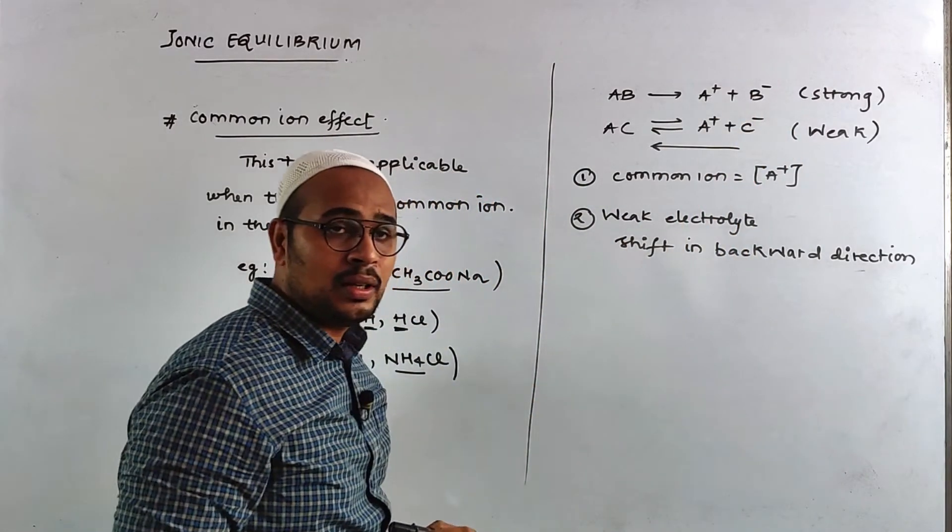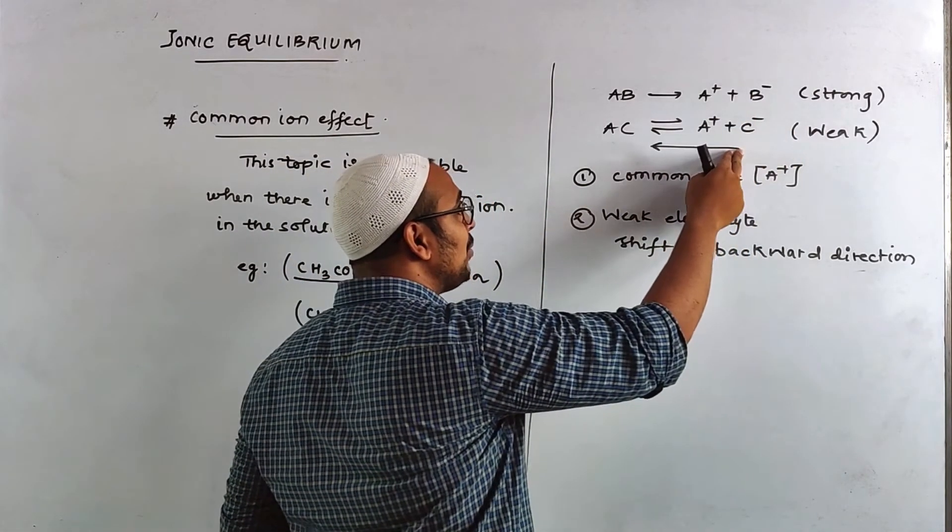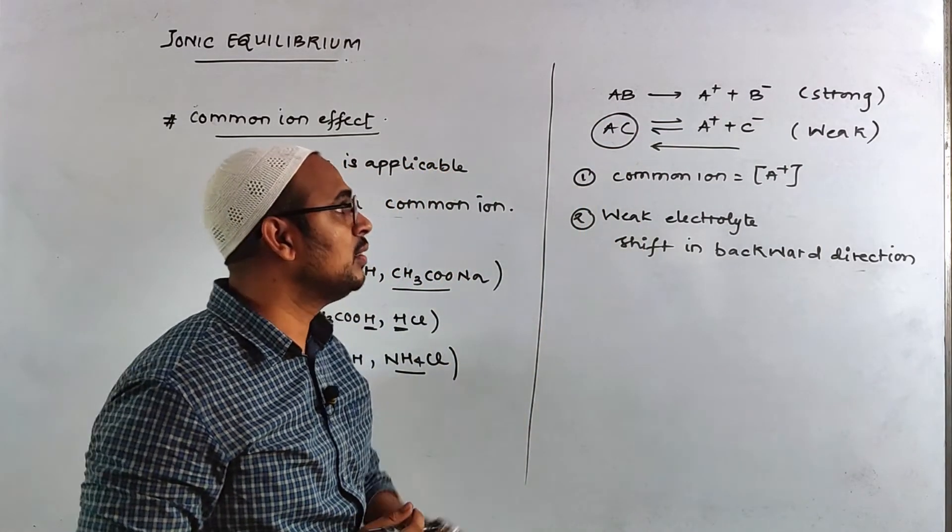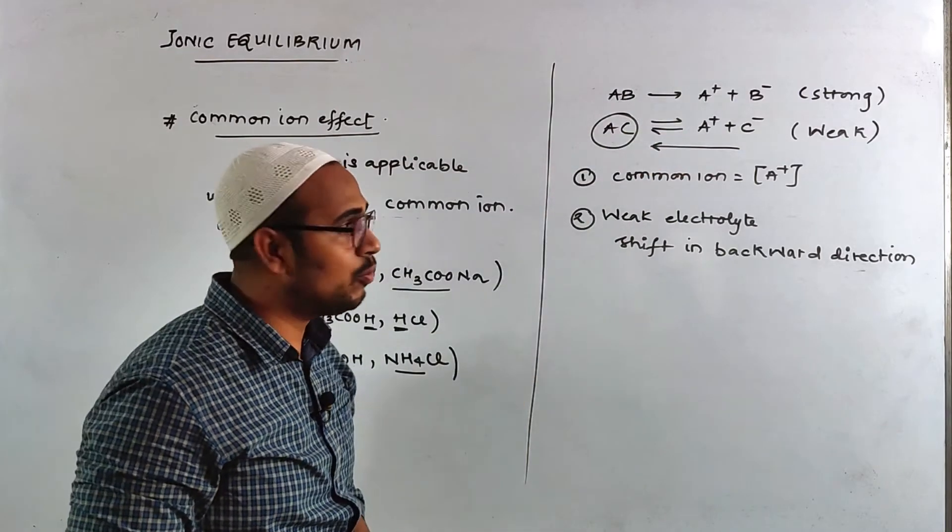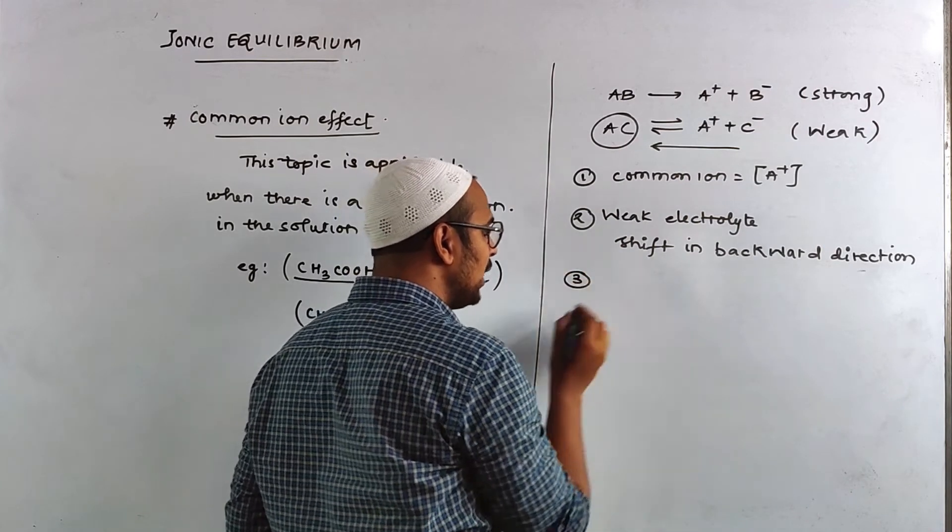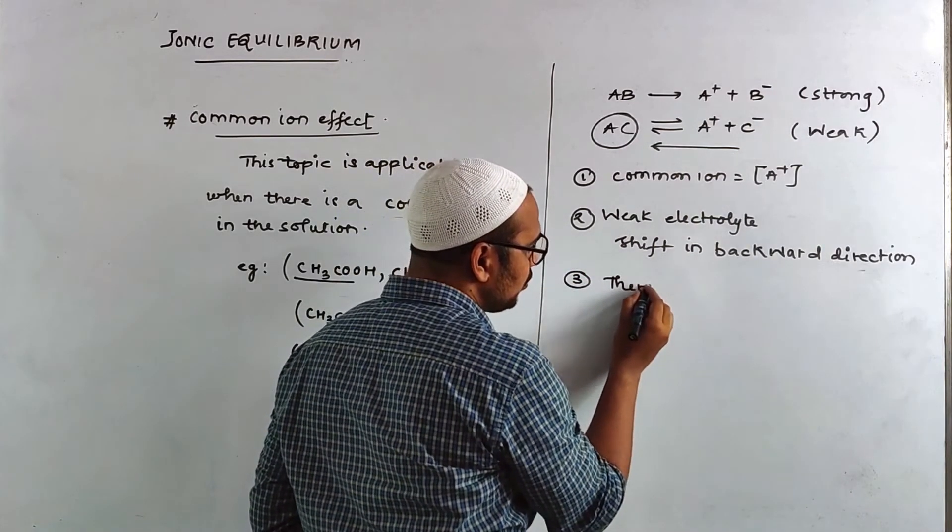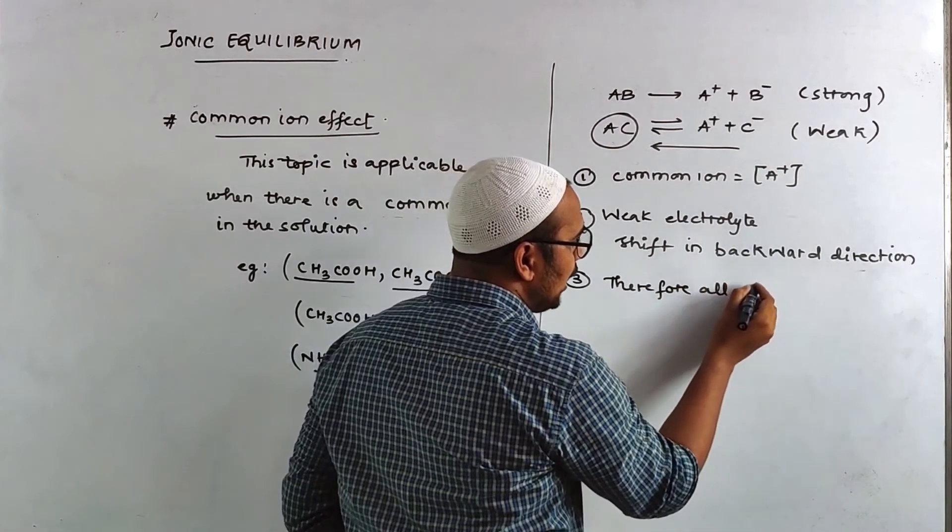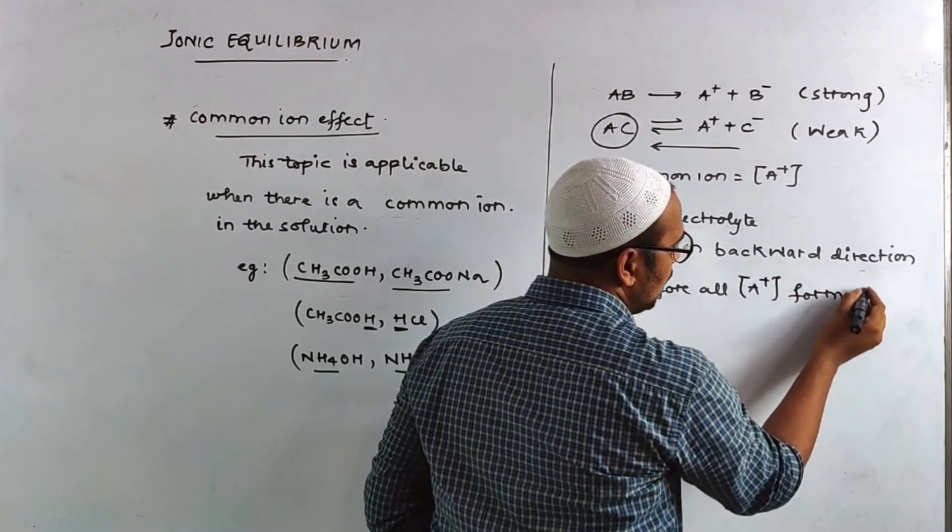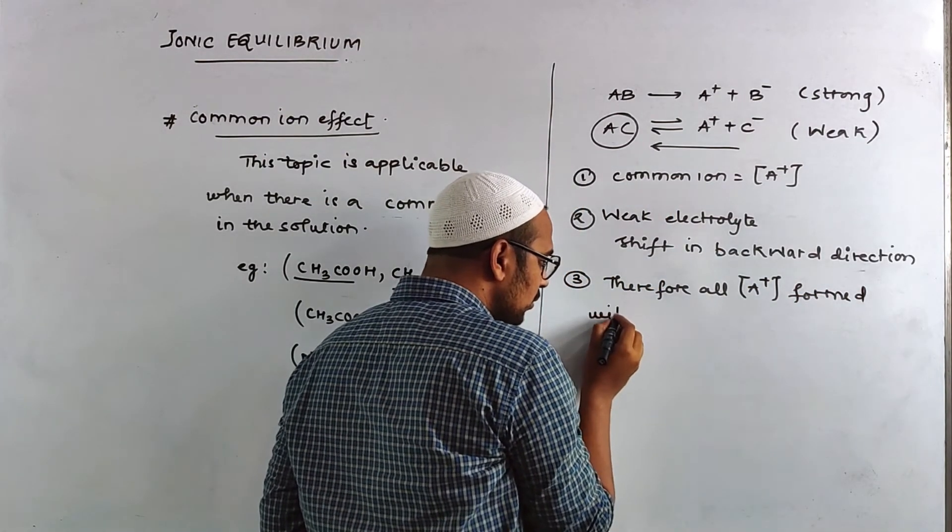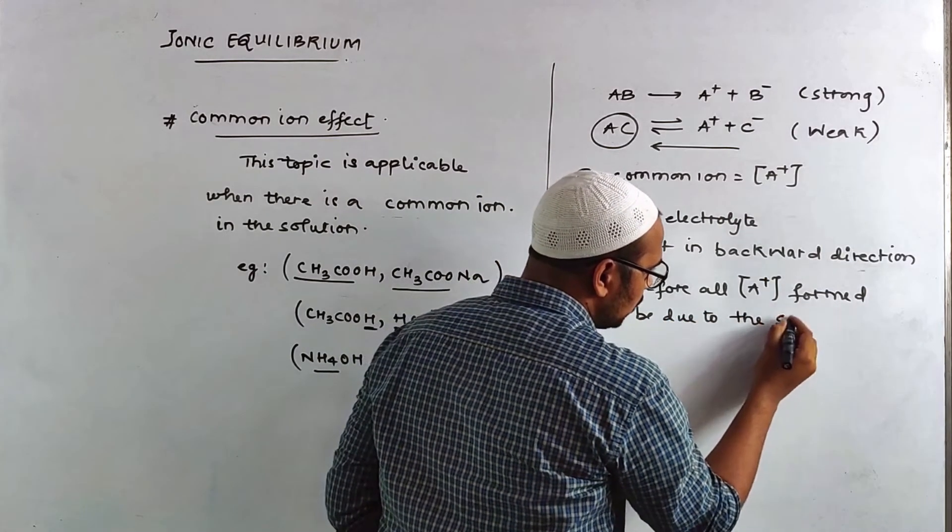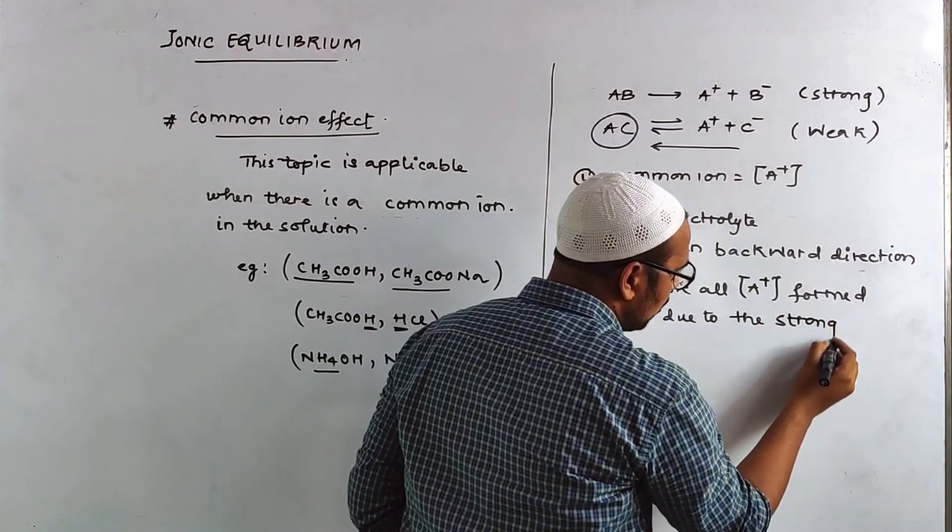Or dissociate is not going to be in final solution. You have to be just AC and which you have to be A plus which will be because of the strong acid. So the third point can be therefore all A plus formed will be due to the strong electrolyte.